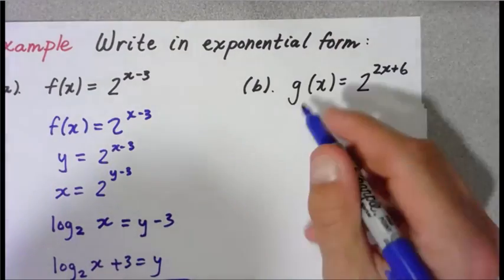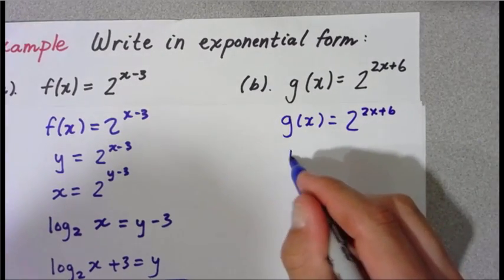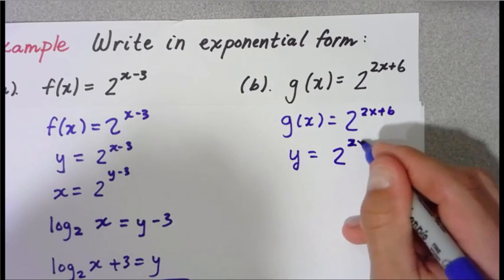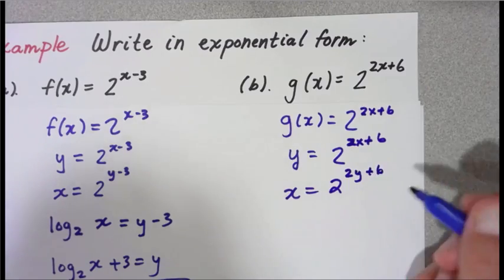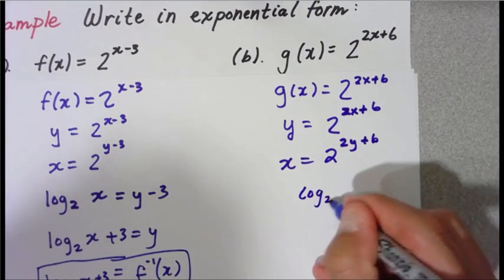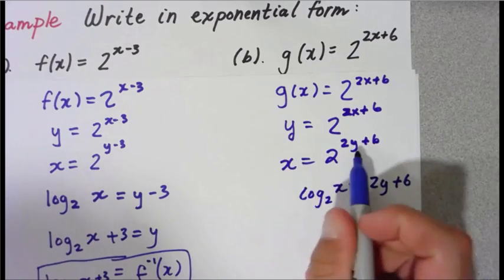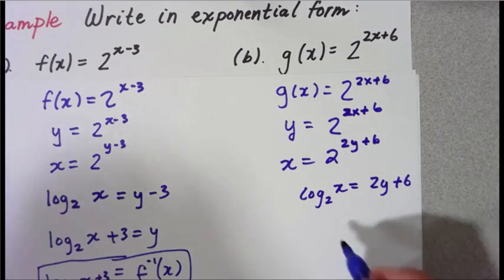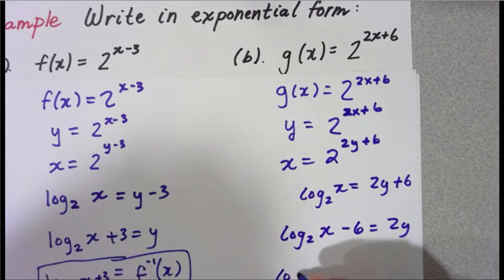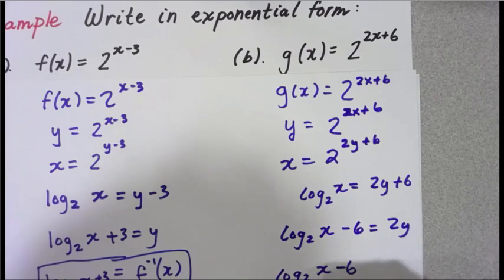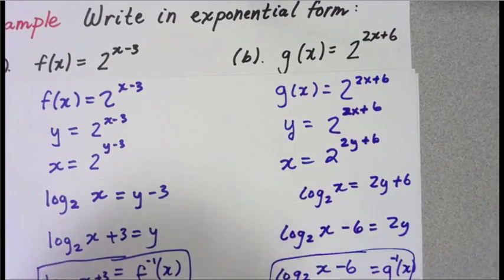Let's look at part b. We have g of x equals 2 to the 2x plus 6. g of x becomes y, so y equals 2 to the 2x plus 6. Now switch x and y: x equals 2 to the 2y plus 6. Apply our logarithmic rule: log base 2 of x equals 2y plus 6. The log is always equal to the power of the exponent. Now solve for y by subtracting 6 from both sides and dividing by 2: log base 2 of x minus 6, all over 2. That's the inverse — g inverse of x equals (log base 2 of x minus 6) divided by 2.